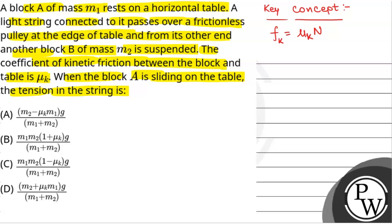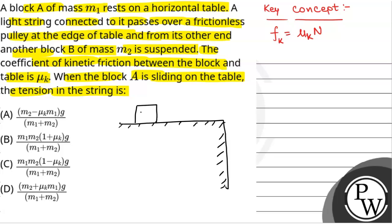Now we will first draw the diagram of the situation given in the question. There is a horizontal table. Suppose this is the horizontal table and a block of mass M1 rests on the table — this is block A with mass M1 — and it is connected to a light string which passes over the pulley. This is the pulley, and this string connects it to another block which has mass M2.